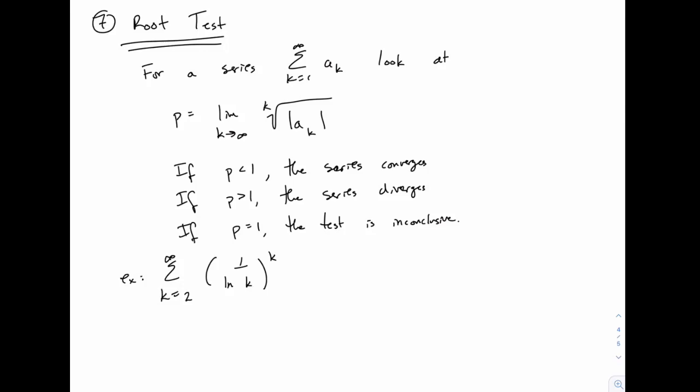The next convergence test is called the root test, and it looks very similar to the ratio test. In fact, it turns out that the ratio test and the root test are closely linked, and you can generally do anything you can do with the root test with the ratio test and vice versa, although the details might be more complicated. So because of that,